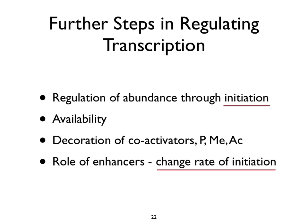Further steps in regulating: abundance is regulated through initiation and template availability—not all templates are equal in configuration or position. Co-activators (host or virus proteins) are decorated with phosphorylation, methylation, acetylation, ribosylation, and more—these modifications make a difference. Enhancers change the rate of initiation. Splicing is another way of regulating RNA.